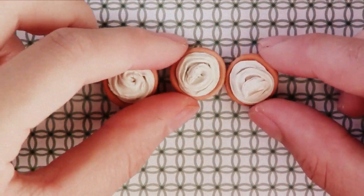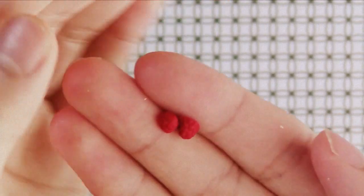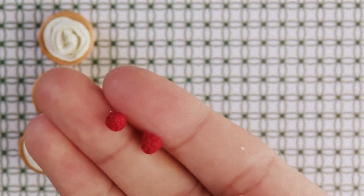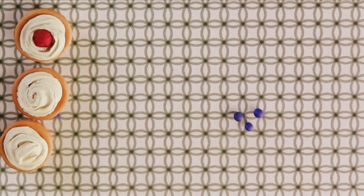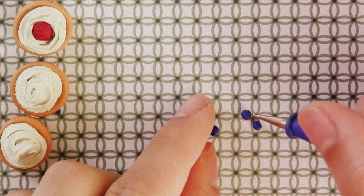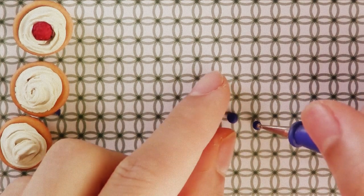Now the final step is to add the fruits. I've already made the raspberry. For the blueberries, I rolled out three pieces of polymer clay and I indented the top of them.